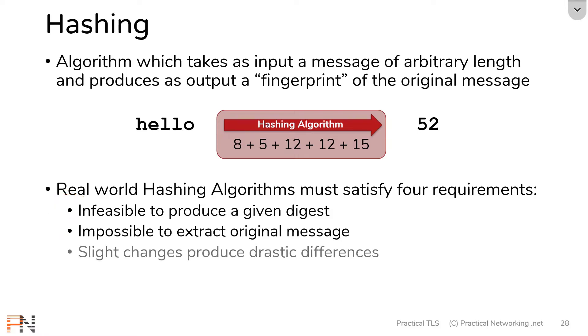The third requirement for a real world hashing algorithm is that a small change to the original message is going to produce a drastic difference in the resulting digest. If I change the word hello to cello, notice the resulting digest went from 52 to 47. Well, that's a pretty small change. From that, you can infer that the word cello is only a little different than the word hello. One of the ideas behind hashing is you want the resulting digest to provide zero hints as to what the original message was. Hence, you want a small change to produce an unrecognizable difference.